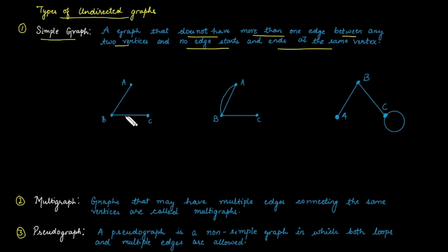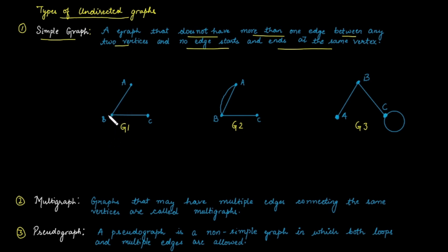Over these three examples, suppose this is graph G1, this is graph G2, and this is graph G3. Graph G1 is a simple graph because multiple edges are not present and no self-loop is present over any vertex. So this can be categorized as a simple graph.